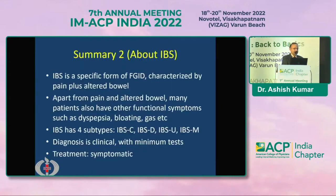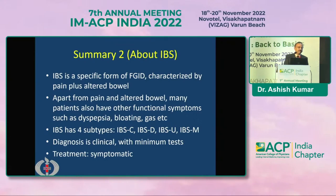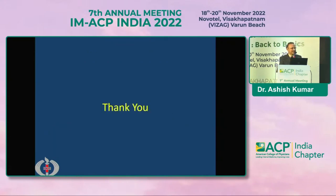In summary, IBS is a specific form of functional GI disorder characterized by pain plus altered bowel habit. Apart from pain and altered bowel habit, many patients also have other functional symptoms such as dyspepsia, bloating, and gas. IBS has four subtypes: constipation-predominant, diarrhea-predominant, indeterminate, and mixed variety. Diagnosis is basically clinical with minimal tests, and treatment is mainly symptomatic. Thank you for your patient hearing.